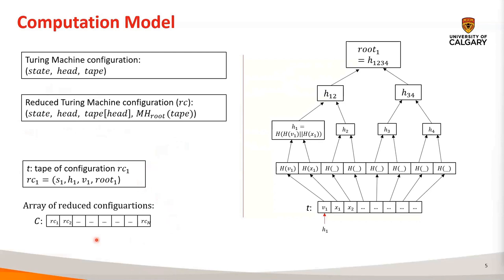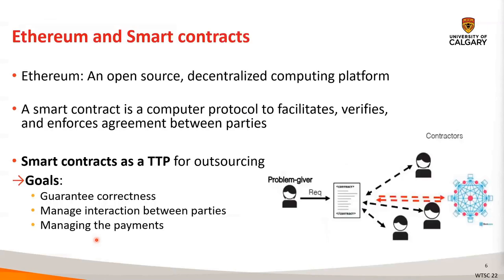An array of reduced configurations consisting of the intermediate computation states is saved by each server during the protocol execution, which are later used for resolving any disputes between the servers' results. The trust on the client as a referee is a major concern in CRR. Therefore, a blockchain-based solution can help to remove the need for the trust assumption on the client in CRR.